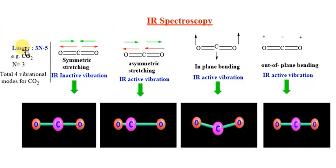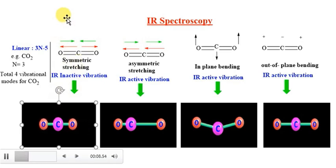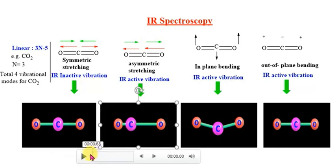Taking CO2 as a linear molecule example, applying the formula 3N − 5 gives 4 different vibrations. The first vibration is symmetric stretching. In symmetric stretching there is no change in dipole moment, which is why this vibration is IR inactive.